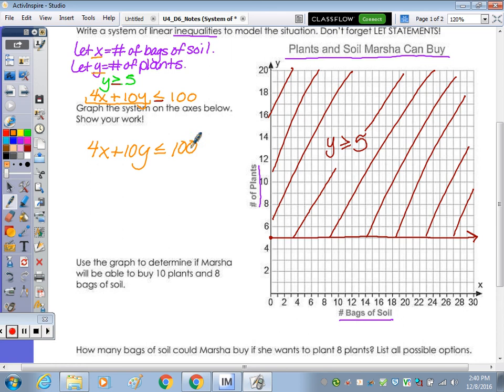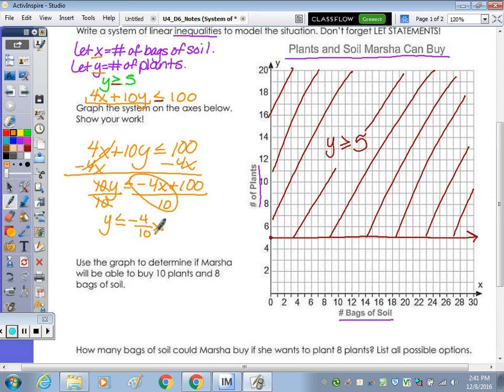The other inequality is not in terms of y is or y equals. So we have to isolate y for the next one. So to isolate y, the first thing we want to do is subtract 4x. We'll have 10y is less than or equal to negative 4x plus 100. Divide by 10. 10's cancel. And we have y is less than or equal to - because we can't divide 4 by 10, we leave it negative 4 tenths x plus, and then 100 divided by 10 is 10. 4 tenths can be reduced. In simplest form, that would be what? 2 fifths. So y is less than or equal to negative 2 fifths x plus 10.